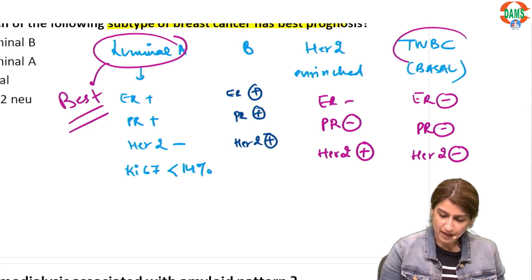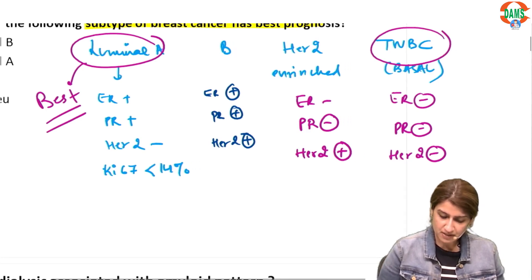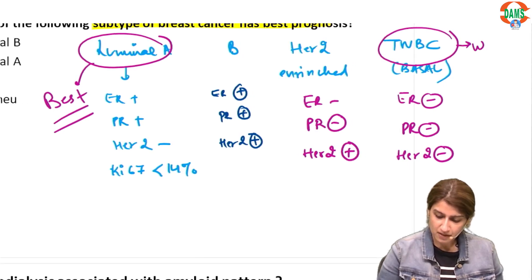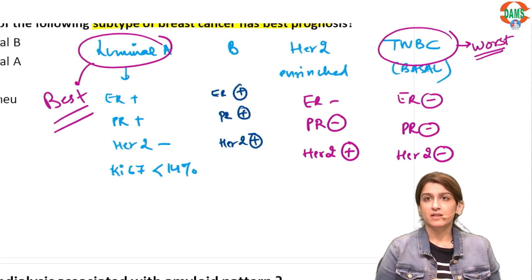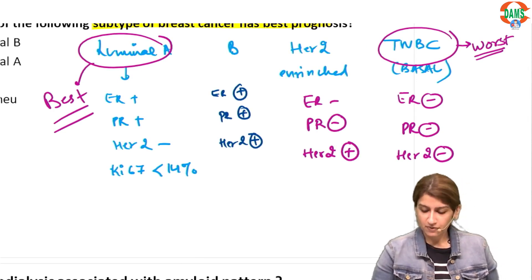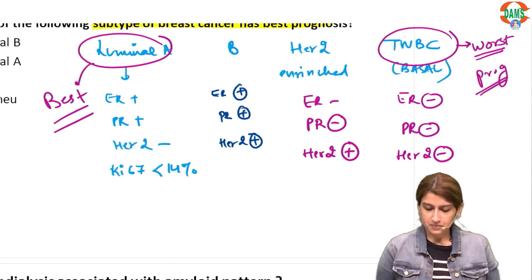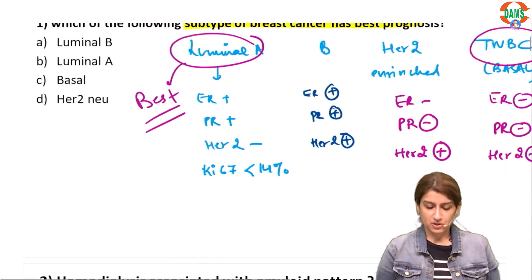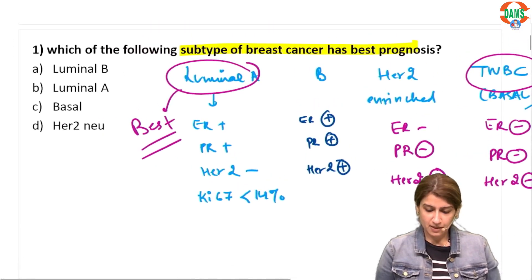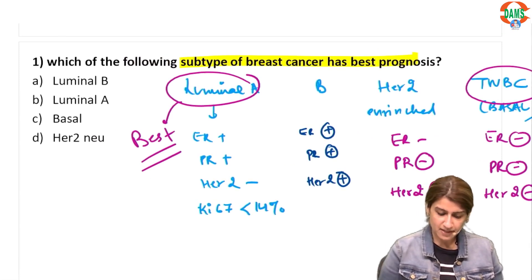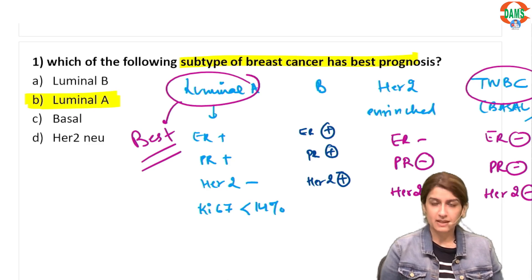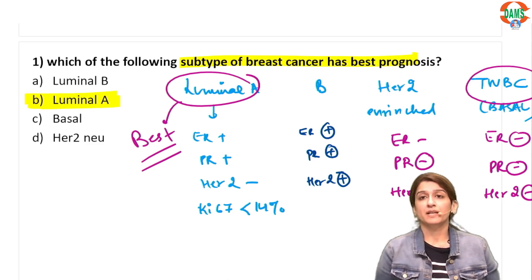Luminal A has the best prognosis of all, and TNBC — or basal type if TNBC is not an option — has the worst prognosis. The correct answer is option B, Luminal A, which has the best prognosis.